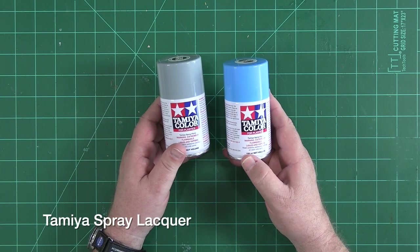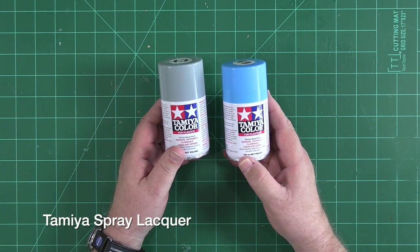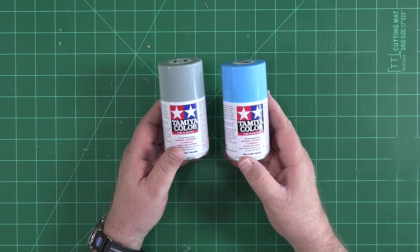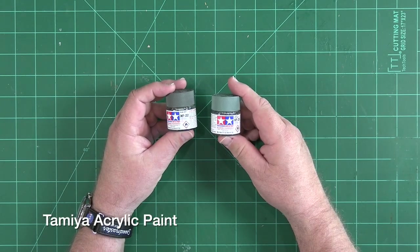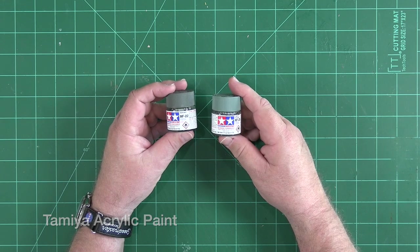Our color coats will go over that, carefully considering the sequence of colors and masking. Next, we can even add some detail colors using acrylic paints applied with an airbrush.